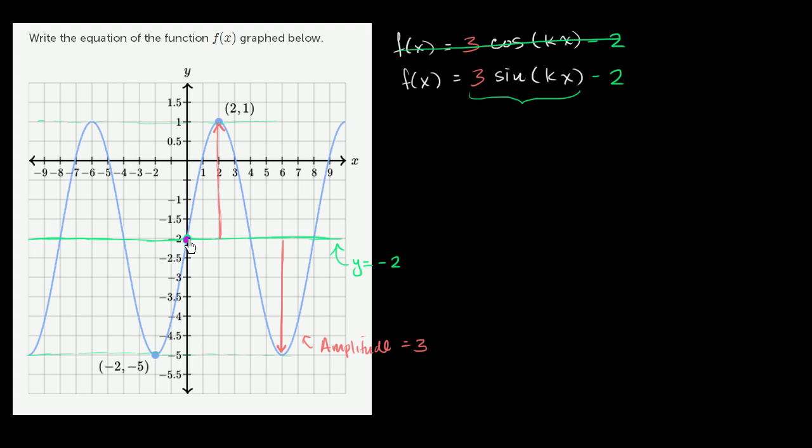We go this point to intersect the midline. And we have a positive slope. The next point that we do that is right over here. So our period is 8.